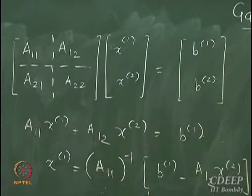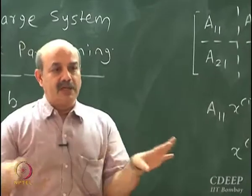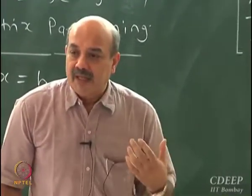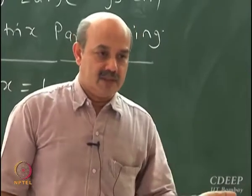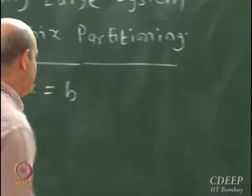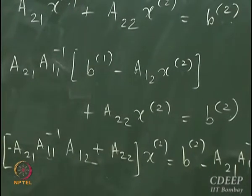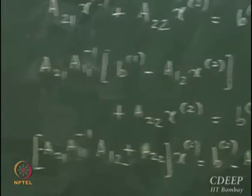This concludes our discussion of sparse matrices and matrix partitioning — all belonging to direct methods. Now I am going to move on to iterative methods. The idea is that you start with a guess solution. The number of multiplications and divisions for iterative methods can be much smaller than for Gaussian elimination-based methods. Over the next few lectures I will focus on how to solve Ax equals b iteratively.